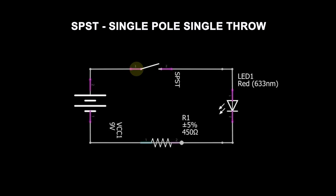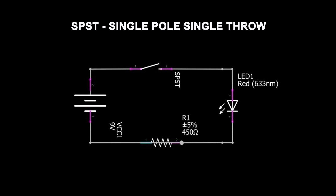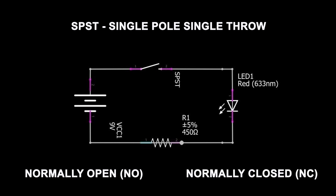We'll start with the simplest type: the SPST, or single pole single throw switch. That means there is one input contact and one output contact. This switch is used to switch something either on or off — in switch terminology, you either make (turn it on) or break (turn it off). The contacts of an SPST can be normally open or normally closed in their resting state, also referred to as push to make or push to break.